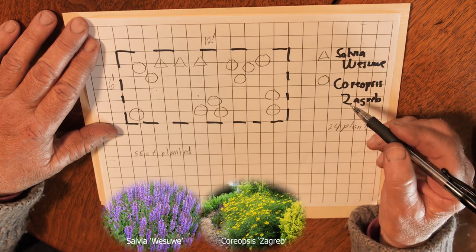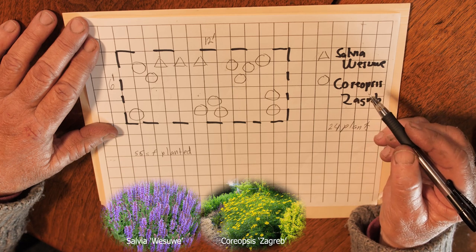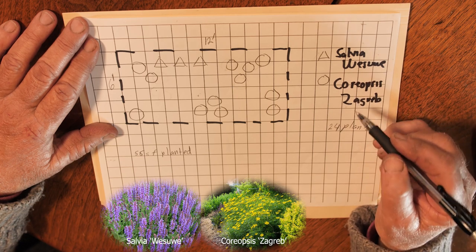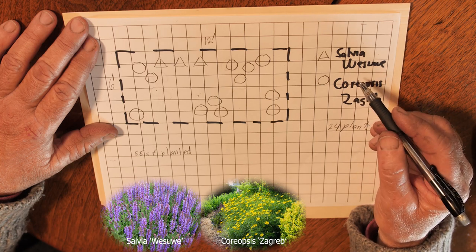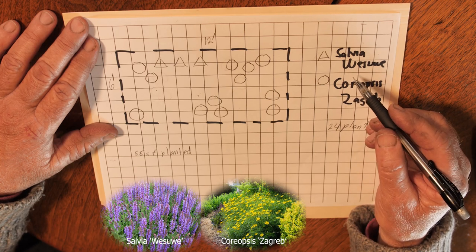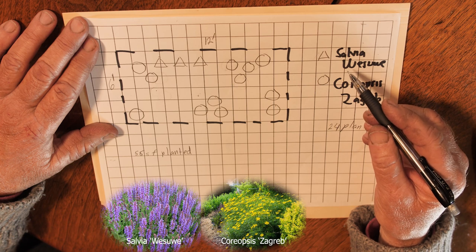They both have similar growth habits, but the Coreopsis zagreb has a little slower growth rate. So the Salvia will flower in mid-May and reach maturity by mid-June, and then re-bloom again in early July.